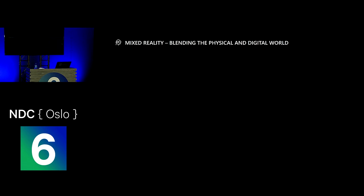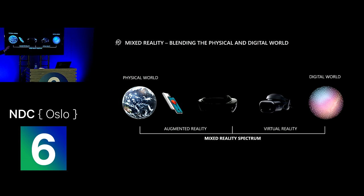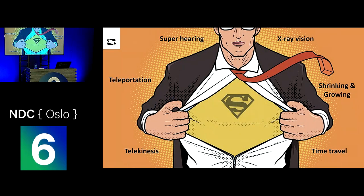When I talk about mixed reality, I'm talking about it as a spectrum between the physical world and the digital world. On one side of that spectrum is augmented reality, where you're taking the real world and adding digital objects to it, or virtual reality, where you're taking a digital world and pulling some information from the real world — such as your head position or hand position, or maybe objects you're about to run into. The HoloLens 2 is on the augmented reality side — it's a wearable augmented reality device.